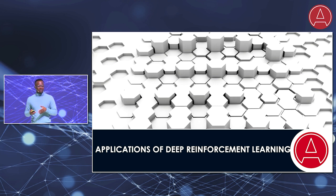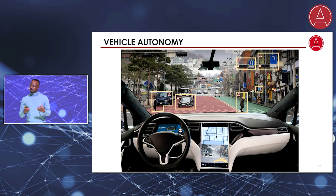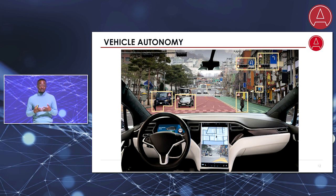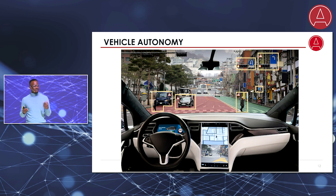Before we deep dive into how to implement this, let's look at some examples where huge leaps have been made using deep reinforcement learning. The first is self-driving cars. Deep reinforcement learning has enabled cars to either fully or semi-autonomously drive themselves. A big leader in this space is Tesla. Even with our cars today, we have driver-assistant packages such as lane-keeping assist, which has been demonstrated to save lives significantly.